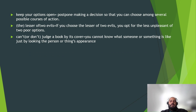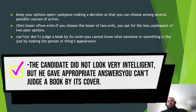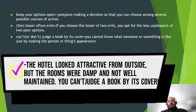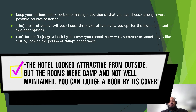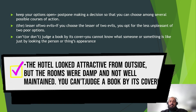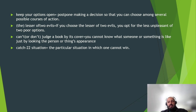'You can't judge a book by its cover' means you cannot know what someone or something is like just by looking at appearances. For example: 'The candidate did not look very interested or intelligent, but he gave appropriate answers — you cannot judge a book by its cover.' Or: 'The hotel looked attractive from the outside, but the rooms were damp and not well maintained — you can't judge a book by its cover.' 'The car was small but packed a lot of power — you can't judge a book by its cover.'